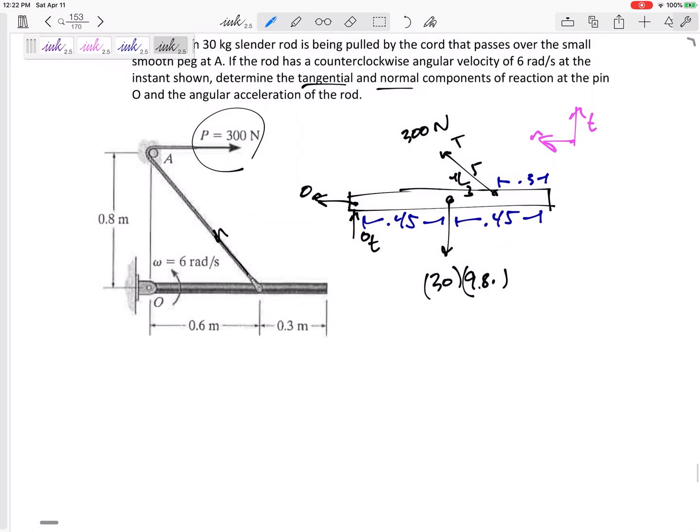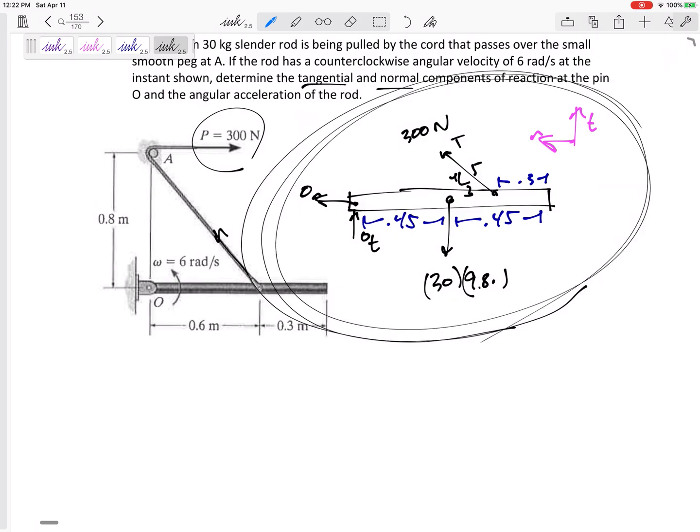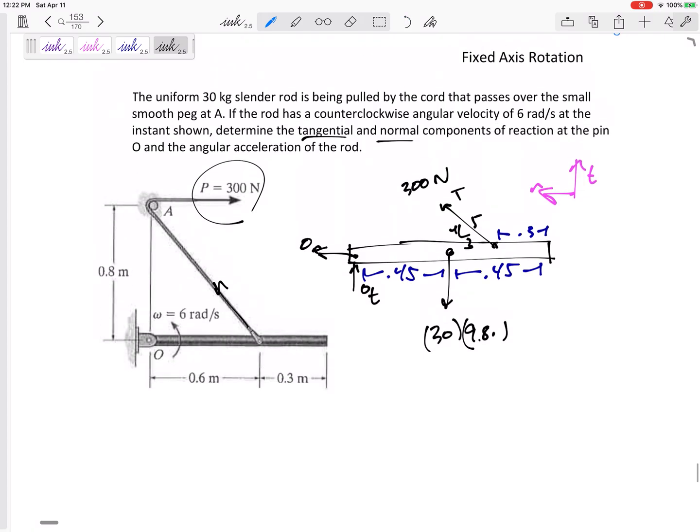Now, draw your free body diagram. Make it good. Make it self-sufficient. I can look at this now as long as I drew it correctly. I don't have to go back and look at the figure. I don't have to go back and look at the problem statement except for this 6 radians per second. So draw a good free body diagram.